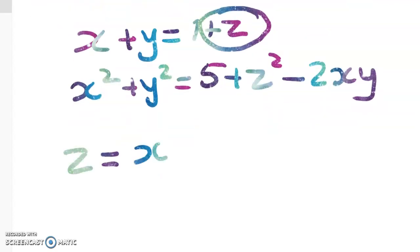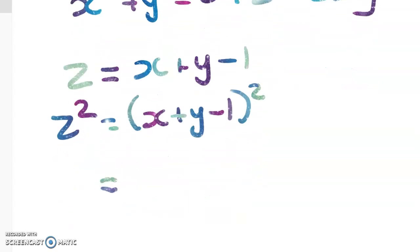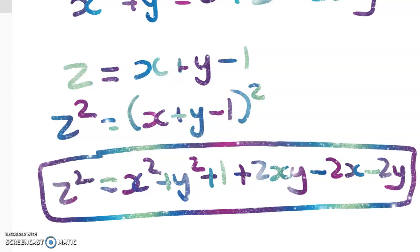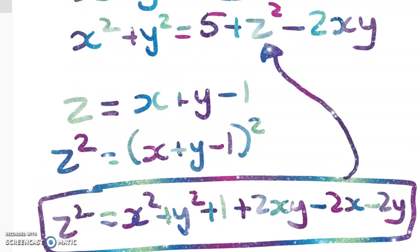What is z? Well, z = x + y − 1, so z² equals that expression. Using the (a + b + c)² result I just gave you, we can expand that out and get x² + y² + 1 + 2xy − 2x − 2y. That's z². I'm going to take z² and substitute it into that term.